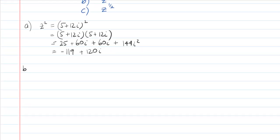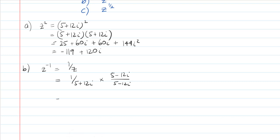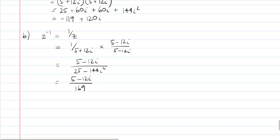Now part b is z to the power of negative one, which equals 1 over z, and that of course equals 1 over 5 plus 12i. We're going to multiply by the conjugate: 5 minus 12i over 5 minus 12i. That's 5 minus 12i on top. The denominator is 25 minus 144i squared, which becomes 25 plus 144, so it's 5 minus 12i over 169. It happens to be 13 squared, which is interesting. Written out: 5 over 169 minus 12 over 169 i.